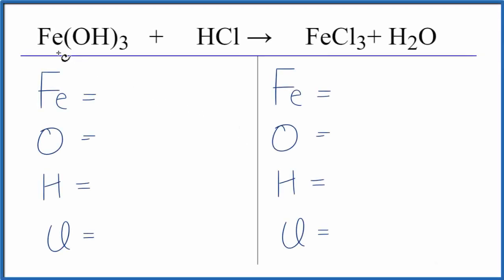In this video we'll balance the equation Fe(OH)3 plus HCl. That's iron 3 hydroxide plus hydrochloric acid. Let's count the atoms up.